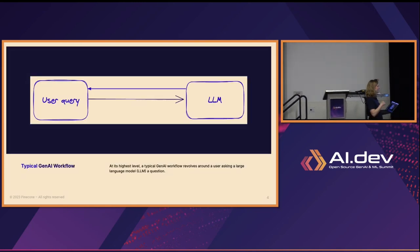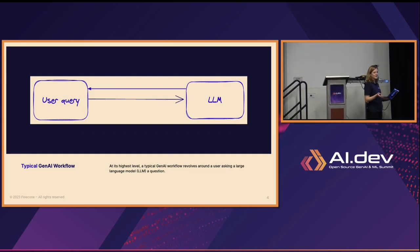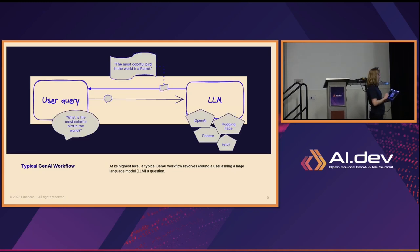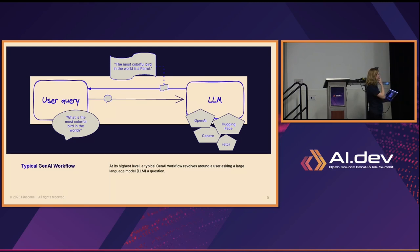This is the typical GenAI workflow. A user will issue a query to an LLM, and that LLM will answer the user. For example, they might ask 'What is the most colorful bird in the world?' and send this query to an LLM — likely made by OpenAI, Cohere, hosted on HuggingFace, etc. — and the LLM would say 'the most colorful bird in the world is a parrot.'